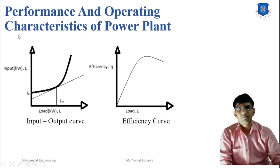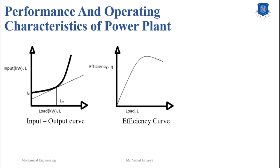Next is the performance and operating characteristics of power plants. The performance of a generating power plant is compared by the average efficiency over a period of time. Average efficiency is the ratio of useful energy output to total energy input during the period considered. The performance of the plant can be precisely represented by the input-output curve from tests conducted on the individual power plant. The input is generally expressed in megajoules per hour and load output in megawatts. For hydro power plants, the input is measured in cubic meters per second of water.